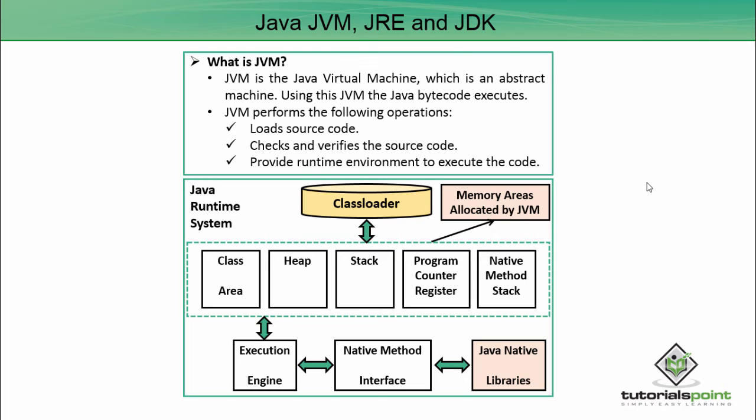Now concentrating on the memory areas allocated by the JVM: the first one is the class area, also called the class method area. This class method area stores per-class structures such as the runtime constant pool, field and method data, and code for the methods. Next is the heap, which is the runtime data area in which objects are allocated, and the heap space will be shared for objects.